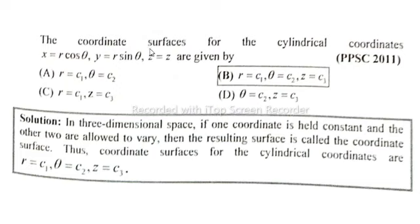MCQ. The coordinate surfaces for the cylindrical coordinates x equals r cos theta, y equals r sin theta, z equals zero are given by